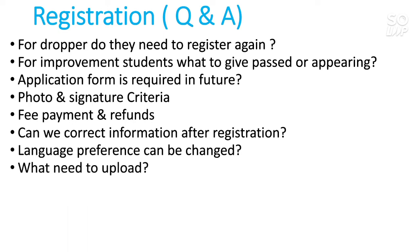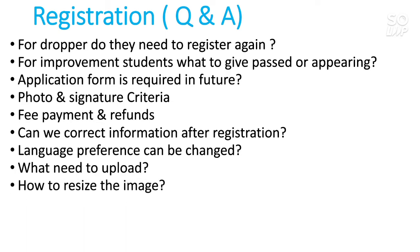What do you need to upload in the upload section? You need to upload only your photo, signature, and category certificate if required. If you belong to the general category, you don't need to upload anything else — no marksheets or 10th/12th documents are needed right now. To resize the image, just Google 'image resizer', paste your image there, and it will resize it. If you clicked a photo that is 1 MB, they will resize it to 20 KB or 30 KB as needed, and it will remain a clear image.